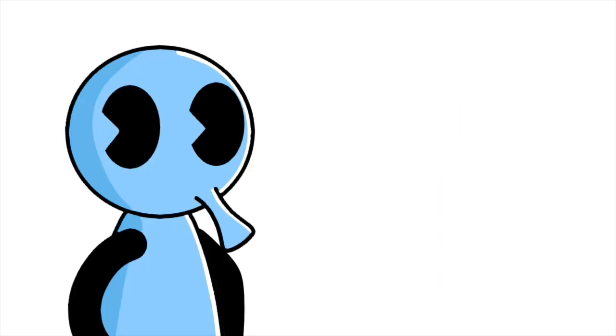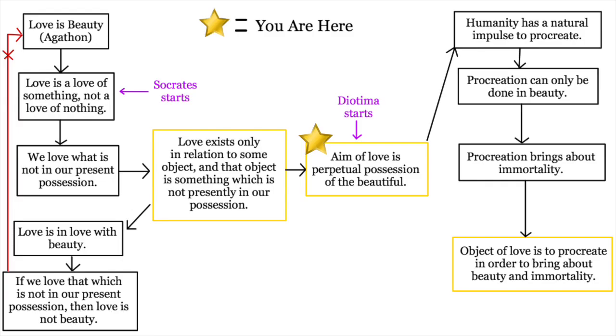So Socrates straight up asks Diotima what is the aim of love. Initially, they agree on the idea that the aim of love is possession of the beautiful, but returning to the golden conclusion from Socrates and Agathon's dialogue, they also add that love is not only possession of the beautiful, but the perpetual possession of the beautiful, so that a person may have that beauty in the future as well. To sum it up, love is the perpetual possession of the beautiful.